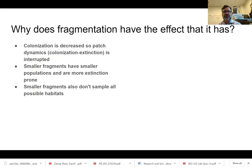That depends on the species in question. Smaller fragments have less biodiversity, because a smaller fragment has a smaller population, and smaller populations are more susceptible to extinction. Also, in a smaller fragment you're less likely to sample all the possible habitats.